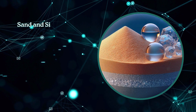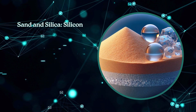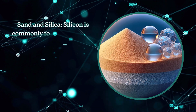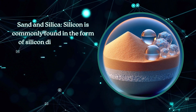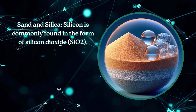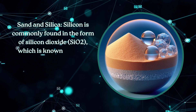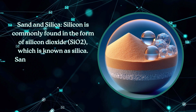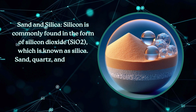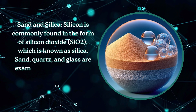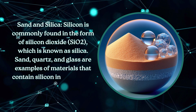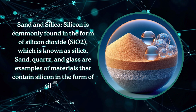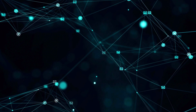Silicon is commonly found in the form of silicon dioxide, SiO2, which is known as silica. Sand, quartz, and glass are examples of materials that contain silicon in the form of silica.